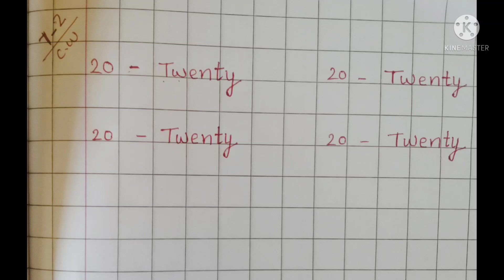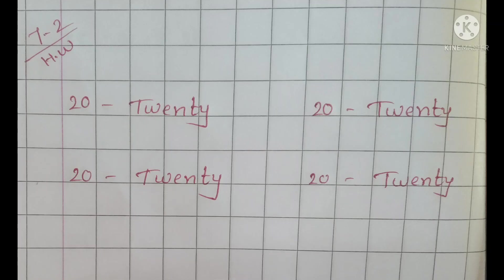Today's classwork is the spelling of 20, which you have to write in the homework part. Today's homework is also the spelling of 20: T-W-E-N-T-E-Y. Thank you!